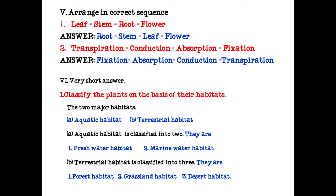Very short answer, first question: Classify the plants on the basis of their habitat. The two major habitats are aquatic habitat and terrestrial habitat. Aquatic habitat is classified into freshwater habitat and marine water habitat. Terrestrial habitat is classified into forest habitat, grassland habitat, and desert habitat.